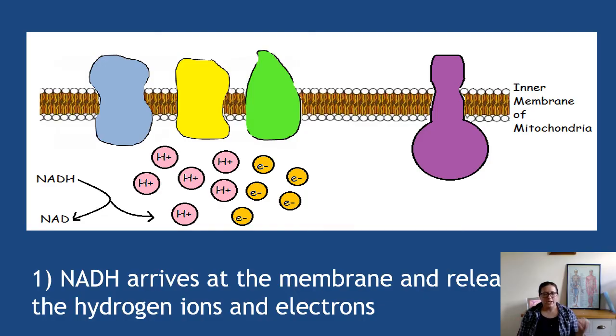Step one: NADH arrives at the membrane and releases the hydrogen ions and electrons. The hydrogen ions are the little pink H pluses, the electrons are the little orange e negatives. And we're just, don't worry about the charge of them, you just need to know it's hydrogen ions. You cannot say just hydrogen, so hydrogen ions and the electrons.